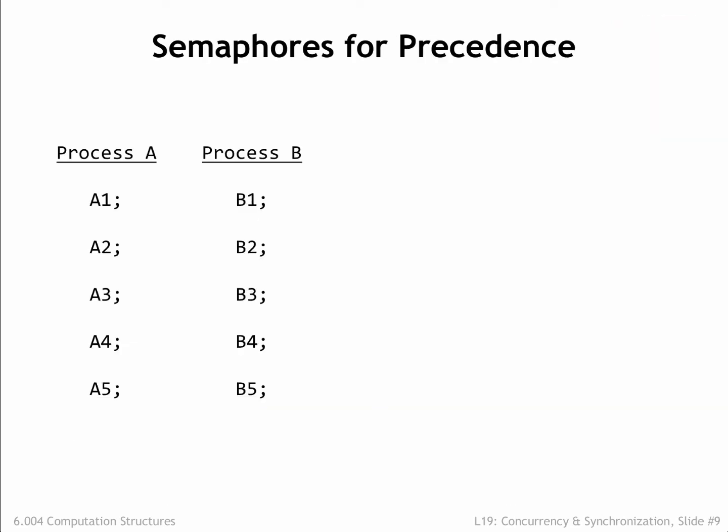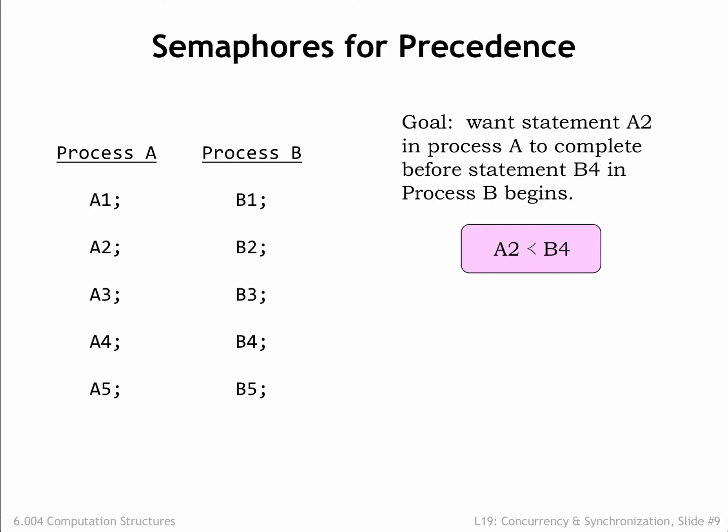Here are two processes, each running a program with five statements. Execution proceeds sequentially within each process, so A1 executes before A2, and so on. But there are no constraints on the order of execution between the processes, so statement B1 in process B might be executed before or after any of the statements in process A. Even if A and B are running in a timeshared environment on a single physical processor, execution may switch at any time between processes A and B. Suppose we wish to impose the constraint that execution of statement A2 completes before execution of statement B4 begins. The red arrow shows the constraint we want.